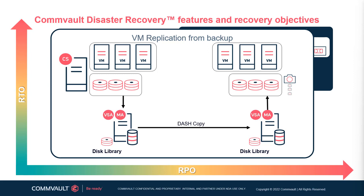In cases where corruption on the source VM is replicated to the destination VM, users can still recover a point-in-time version of the source VM from older backups. VM replication can be initiated automatically after backups have completed or on a scheduled basis — for example, daily or weekly. VM replication includes orchestration features to perform test boots, failovers, failbacks, and other operations that enable you to test the DR site or move operations between the primary and destination site. VM replication using backup data is supported by several source and destination hypervisors and is targeted where the RPO is greater than four hours.